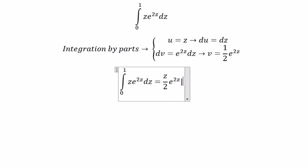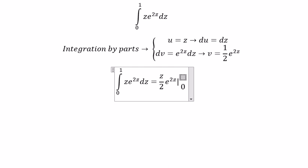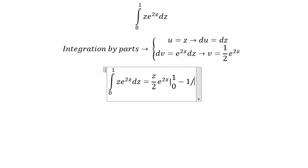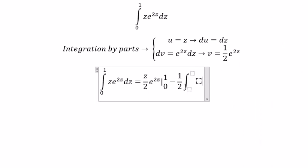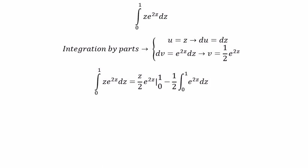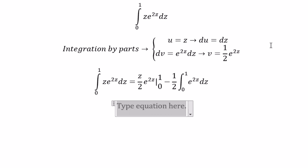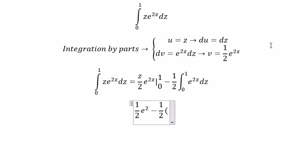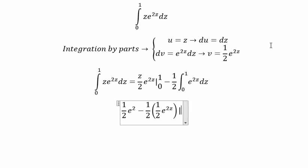We put the boundaries in here. We have negative 1 over 2, the integral from 0 to 1. We got u multiplied by v, giving e to the power of 2z. We put 1 in here and 0 in here, and we got 1 over 2 e to the power of 2z, then we put the boundaries in here.